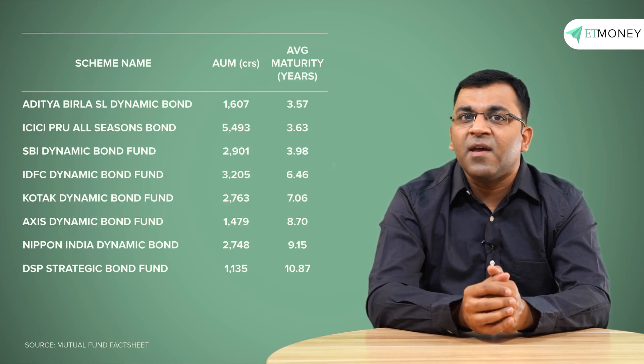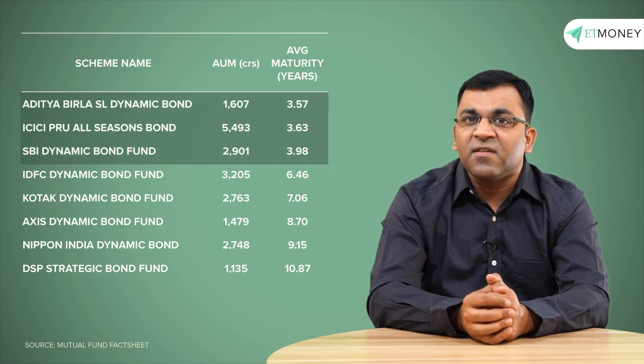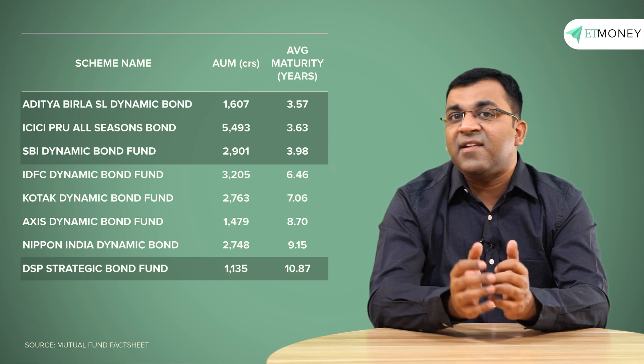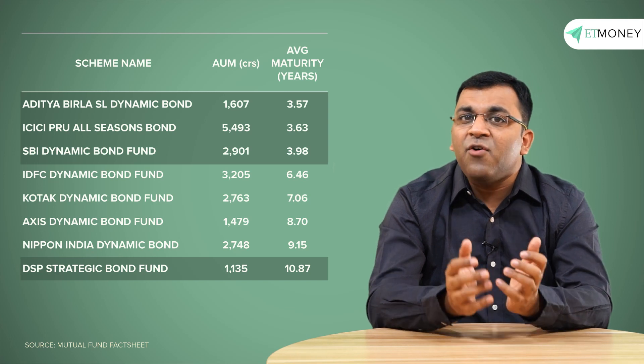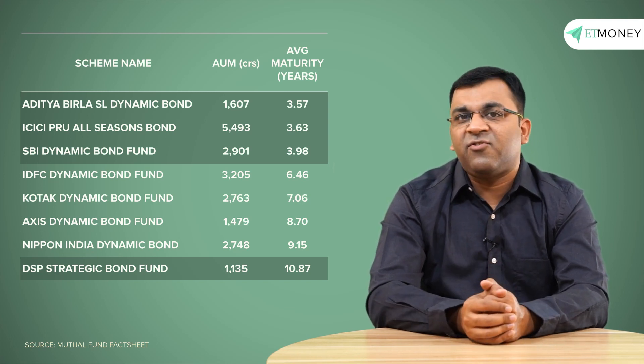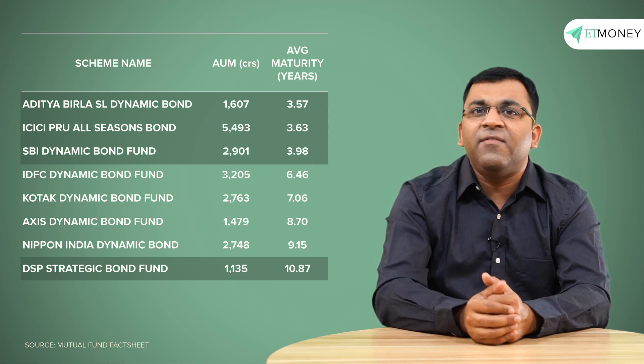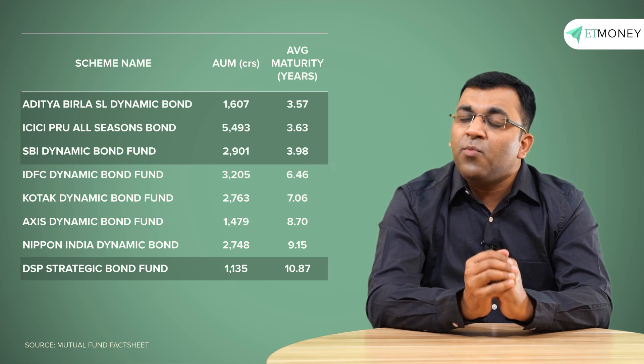It is not uncommon to find different schemes within the same category having starkly different average maturities — like dynamic bond funds where some schemes have an average maturity of just 3 to 4 years while others in the same category go as high as 10 years. This variability is mostly attributable to how fund managers view the direction and timing of interest rate changes. An understanding of average maturity is very important as it has a bearing on your investment horizon and the active management of your debt portfolio.